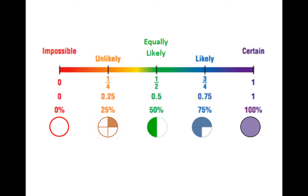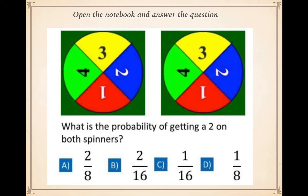The next question is a bit more tricky. Open your notebook and answer: what is the probability of getting a two on both spinners? If you spin both spinners, what is the probability that both show two? Think about all the different options — there are four possible answers — and think carefully about what the answer could be and why.